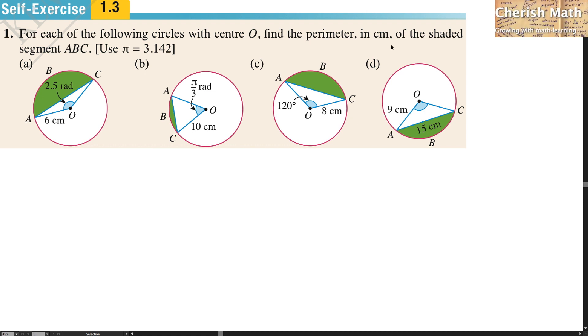Say hi from Cherish Math. Here is the first question. For each of the following circles with center O, find the perimeter in cm of the shaded segment ABC. Use pi equal 3.142.